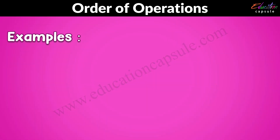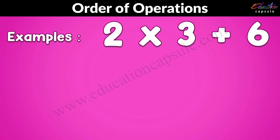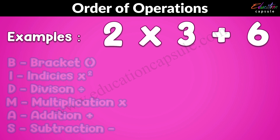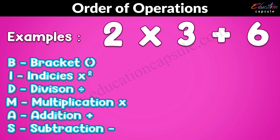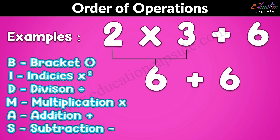Let's solve a question: 2 times 3 add 6. According to BIDMAS, multiplication will be done first and then we will go for addition. So 2 times 3 is 6, and 6 add 6 is 12.